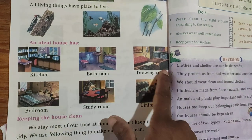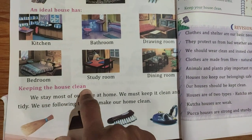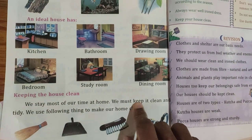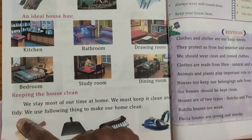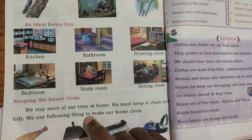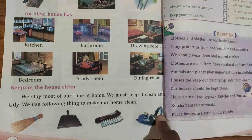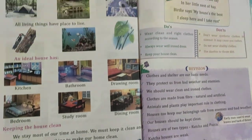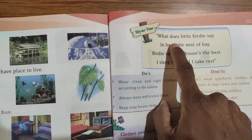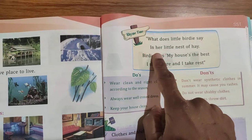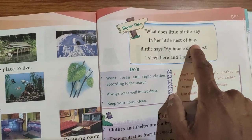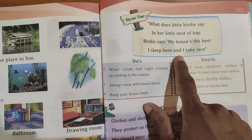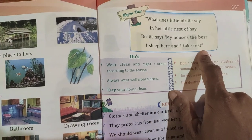Keeping the house clean — we stay most of our time at home, so we must keep it clean and tidy. We use the following things to make our home clean. And there is a rhyme: 'What does little birdie say in her little nest today? Birdie says my house the best — I sleep here and I take rest.'